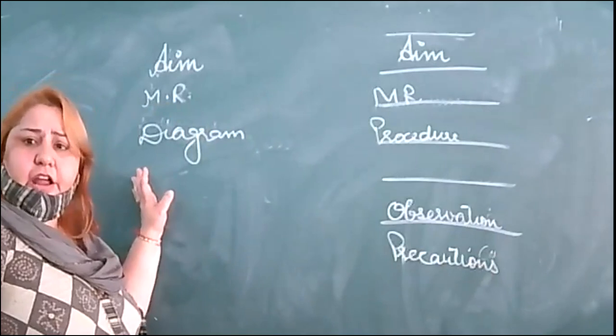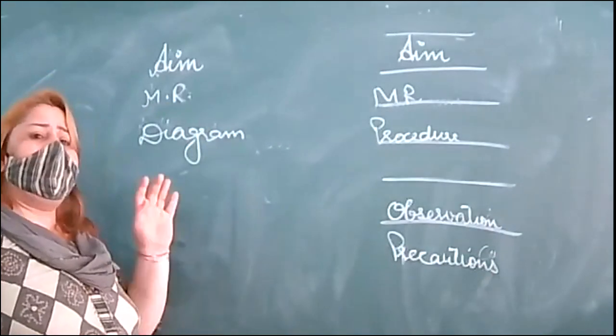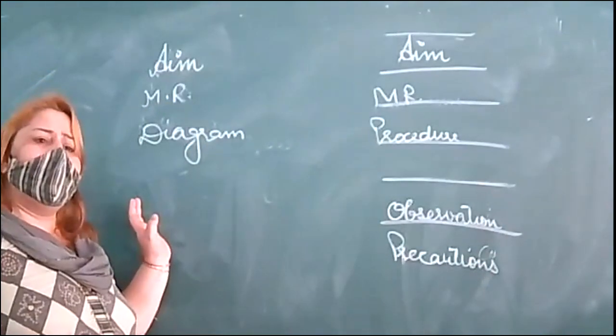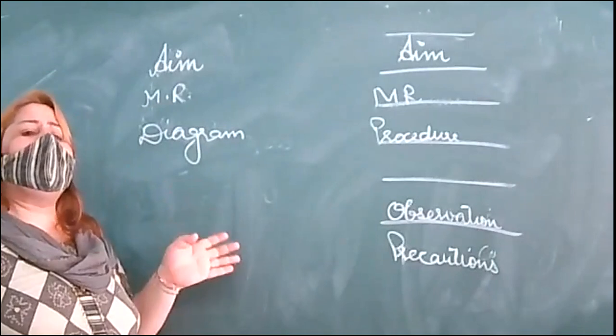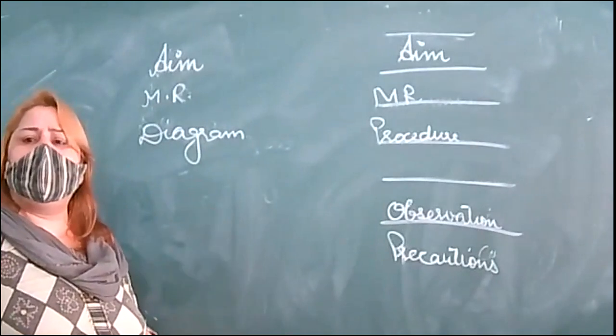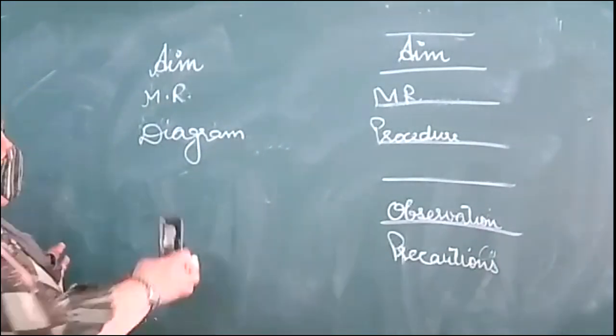Now the activity name — in the bio portion, you have to make a temporary mount of onion peel. We have already discussed this.